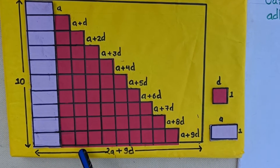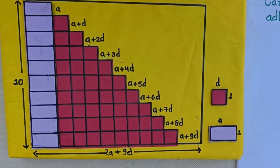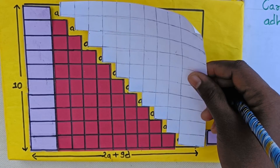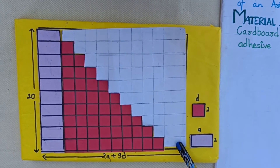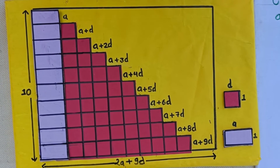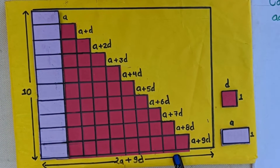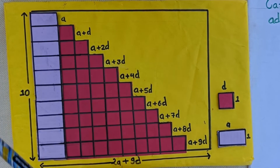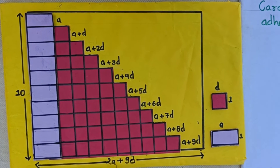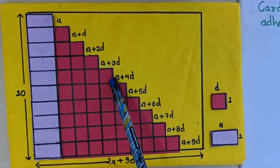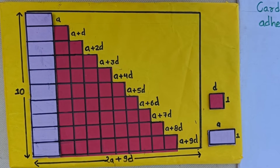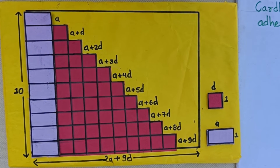If we add another stair arrangement inversely, this will form a rectangle. Hence the length of the rectangle would be 2a plus 9d and the breadth is 10 units. So the area of the rectangle is (2a + 9d) × 10, and the area of the stair is half the area of the rectangle: half of (2a + 9d) × 10.